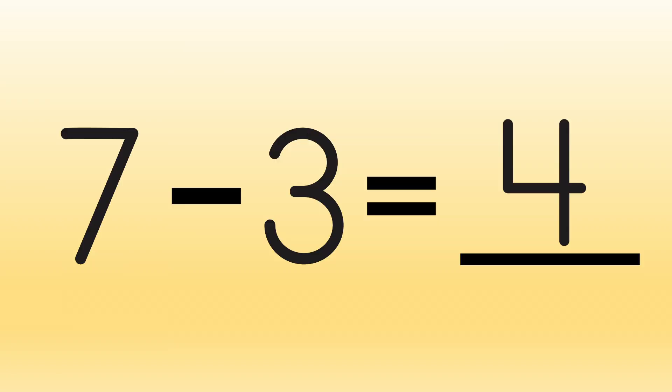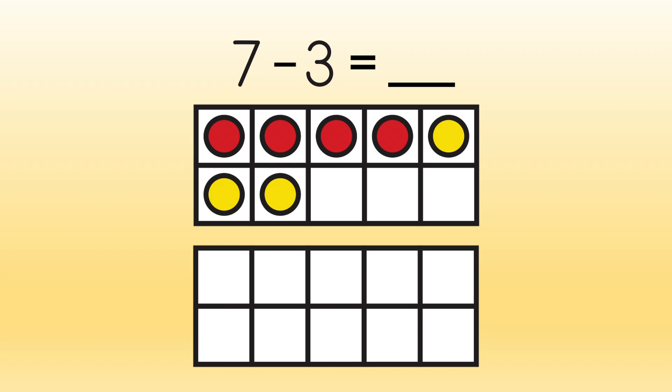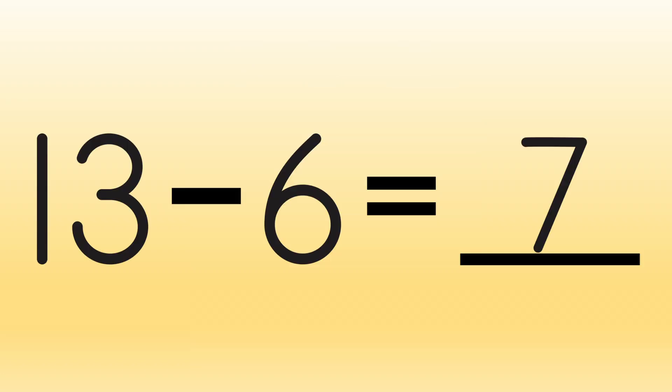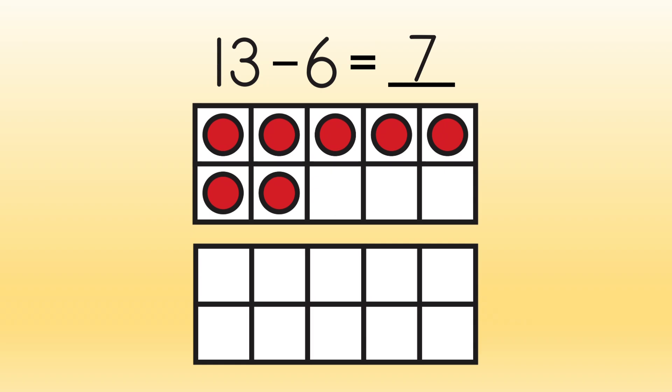7 minus 3 equals 4 looks like this. Again, we can subtract larger numbers up to 20 with our tens frames too. 13 minus 6 equals 7 looks like this. We've got 7 counters left in our frames. The difference is 7.